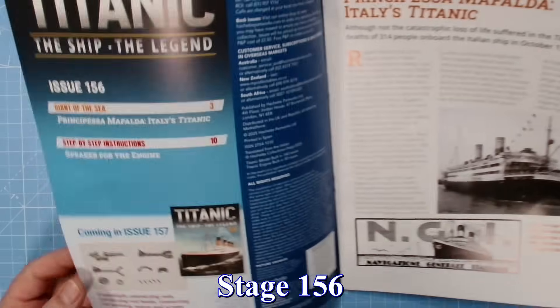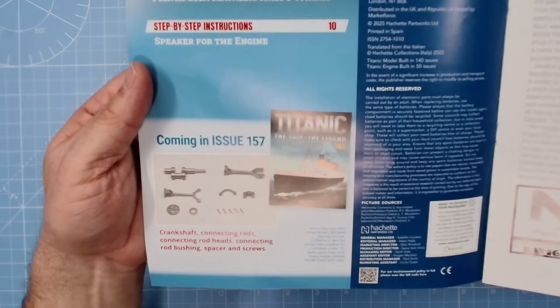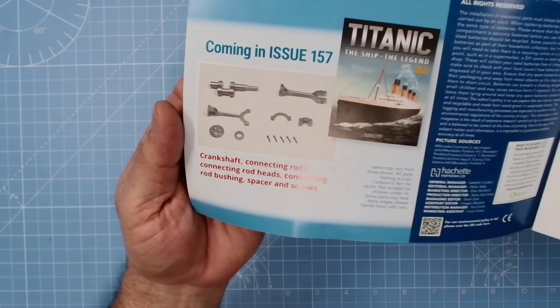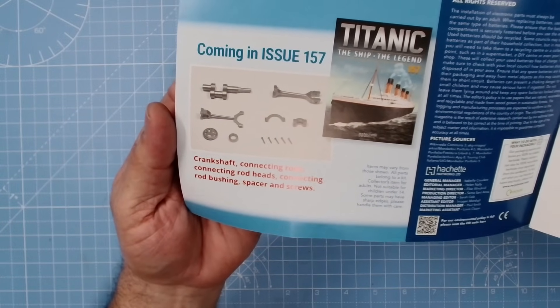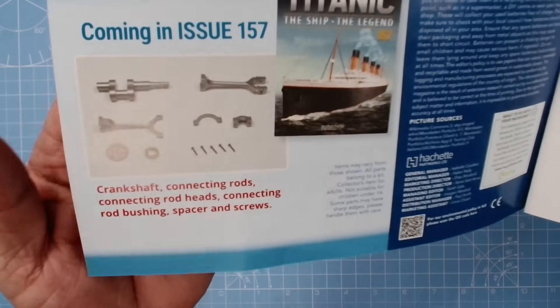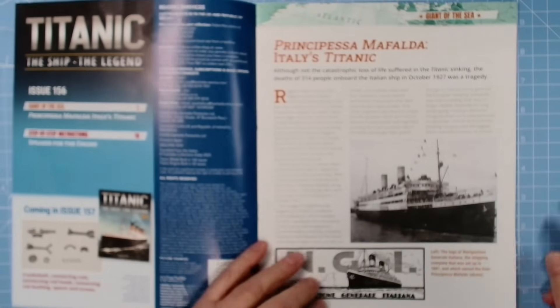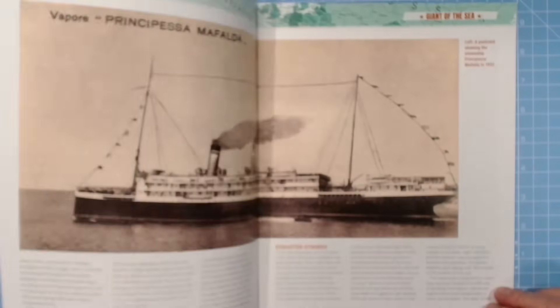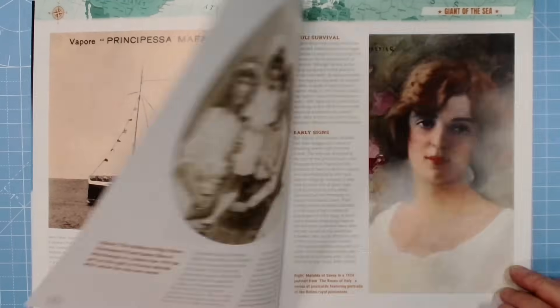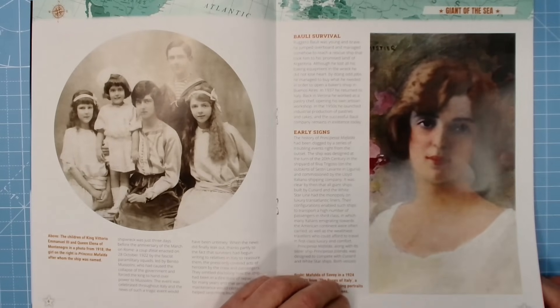Coming in issue 157, crankshaft, connecting rods, connecting rod heads, connecting rod bushing, spacer and screws. Excellent, that's very much different. And here we have the magazine, there we go, lovely pictures.